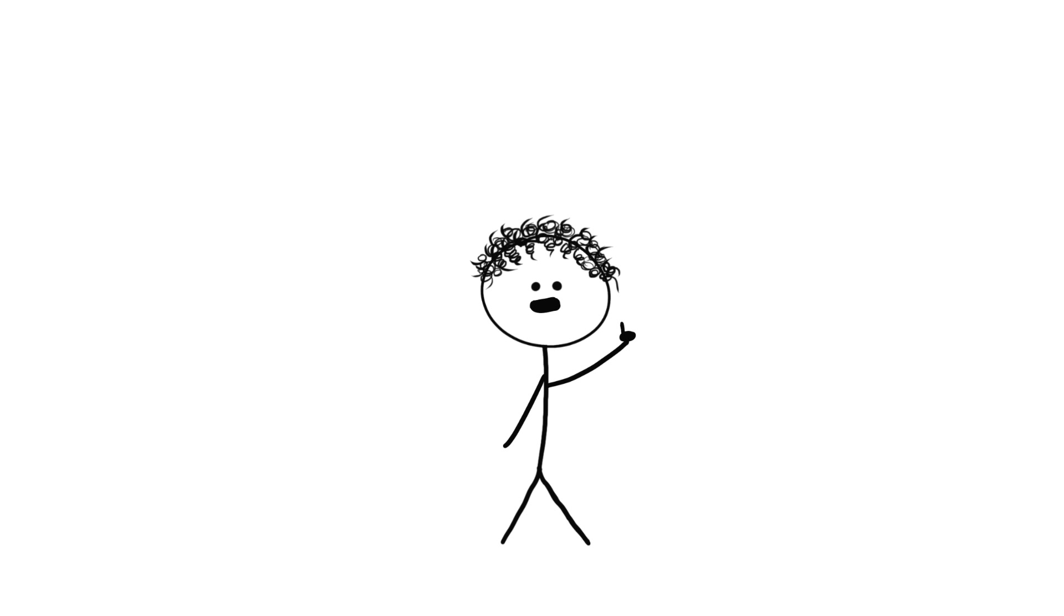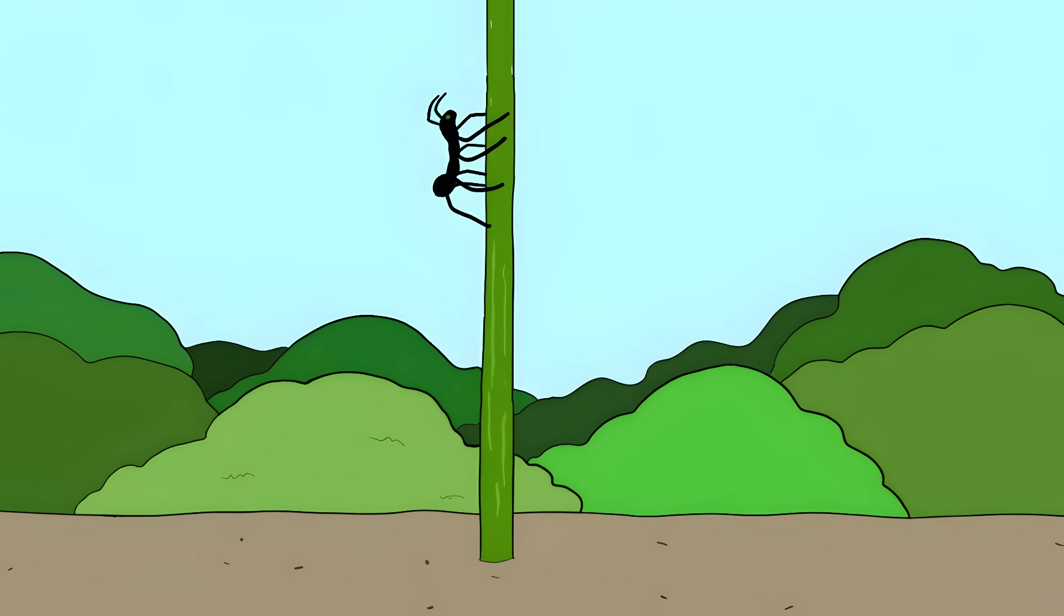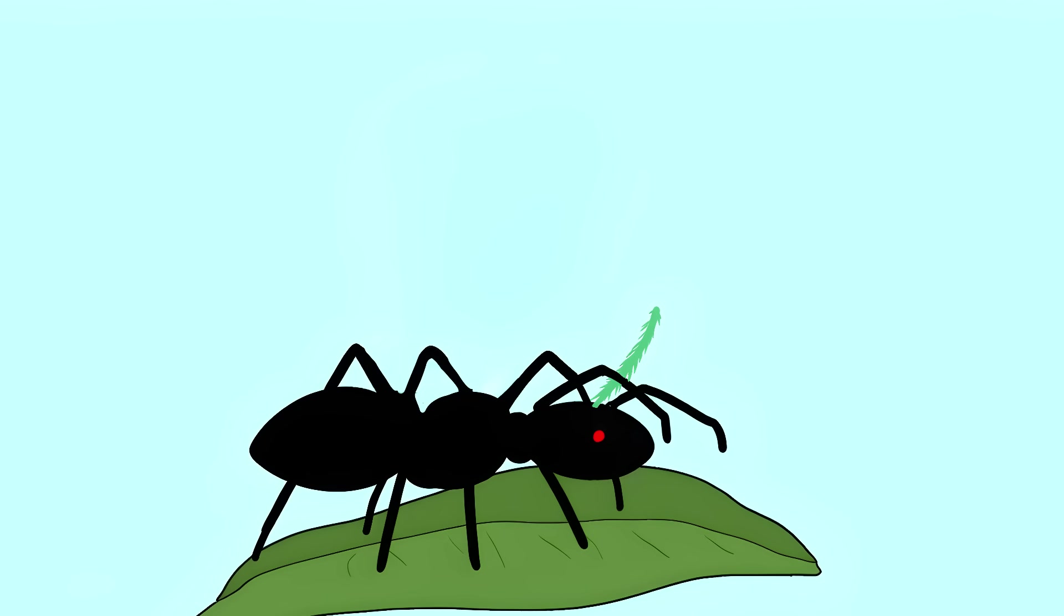The fungus doesn't even need to reach the brain to control its host. Instead, it wraps around the ant's muscles like a puppet master pulling strings. The infected ant leaves its colony and climbs up plants. The ant clamps down on a leaf with what scientists call the death grip. And that's where it stays.